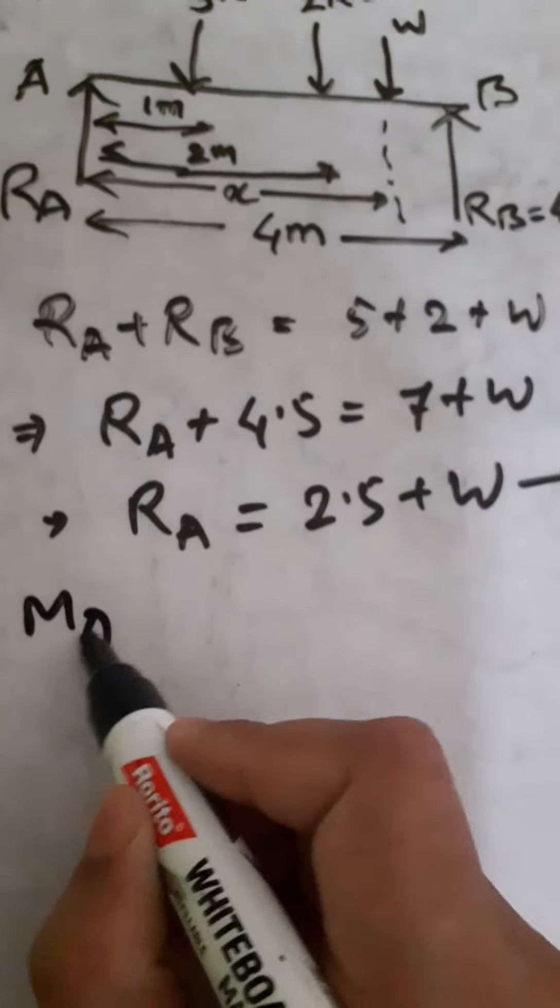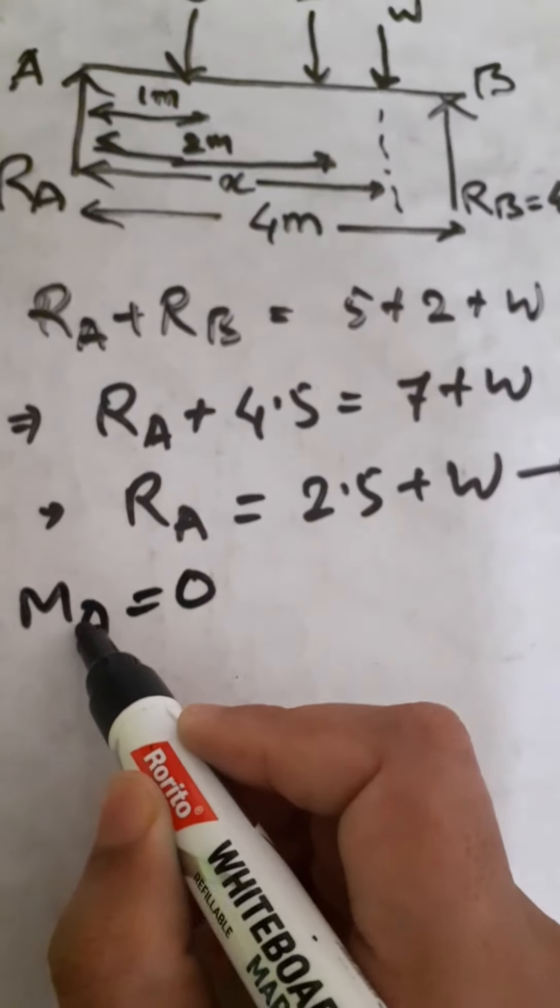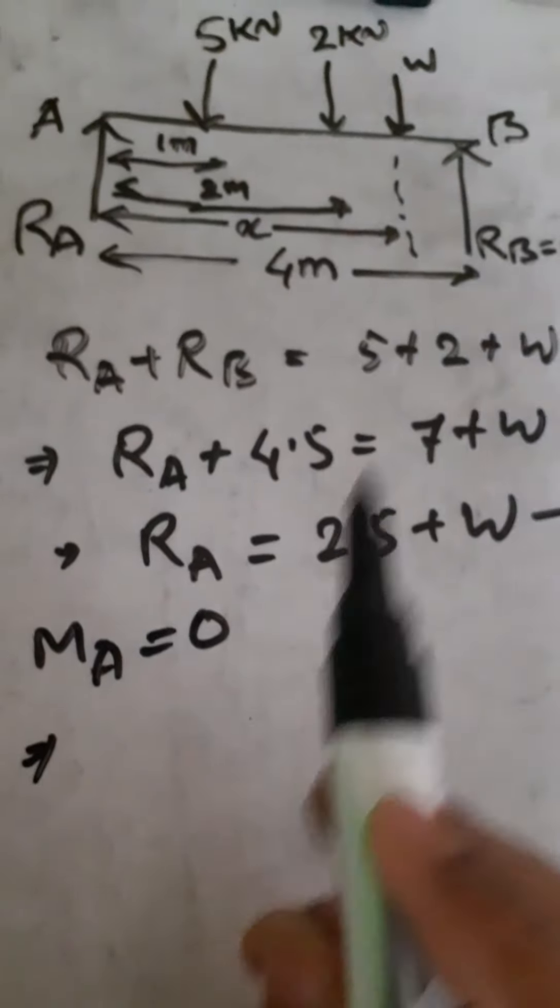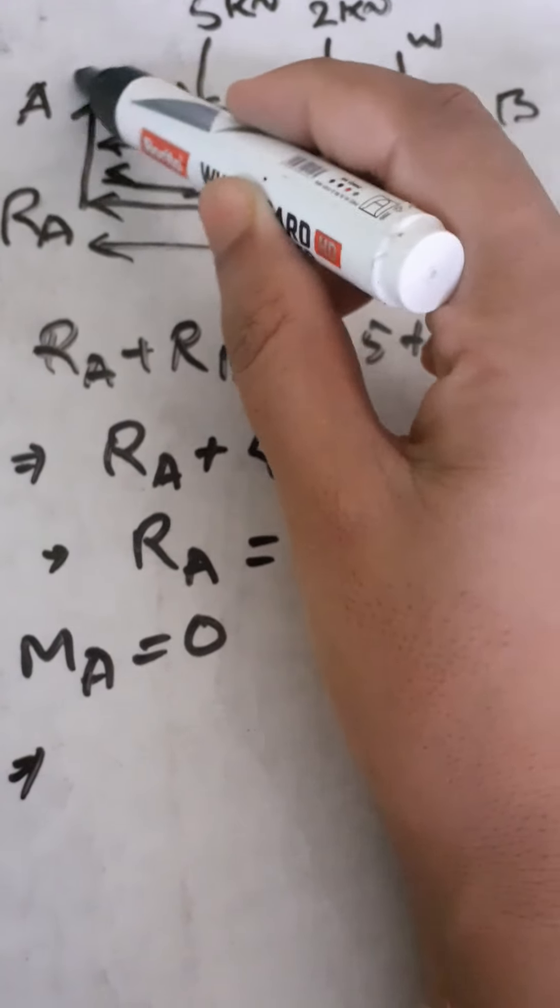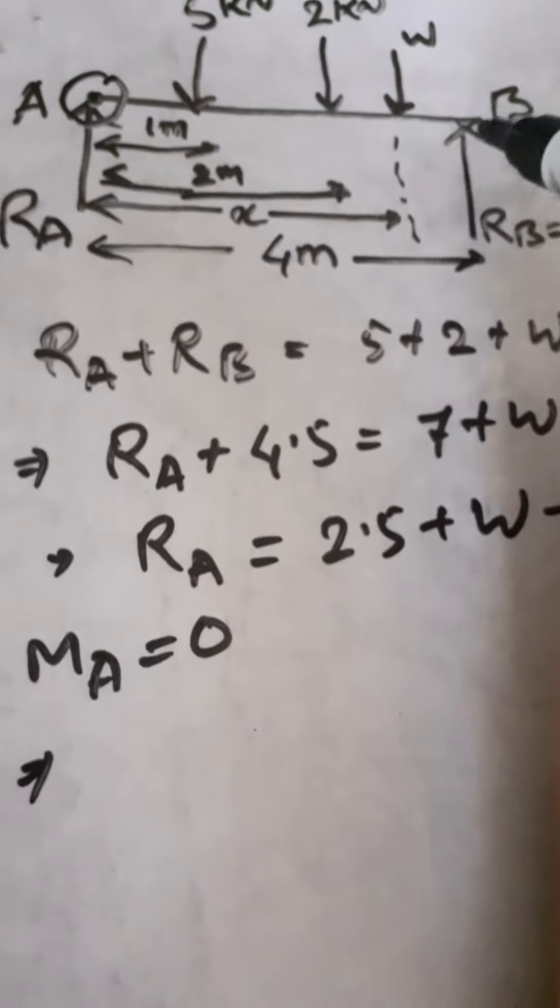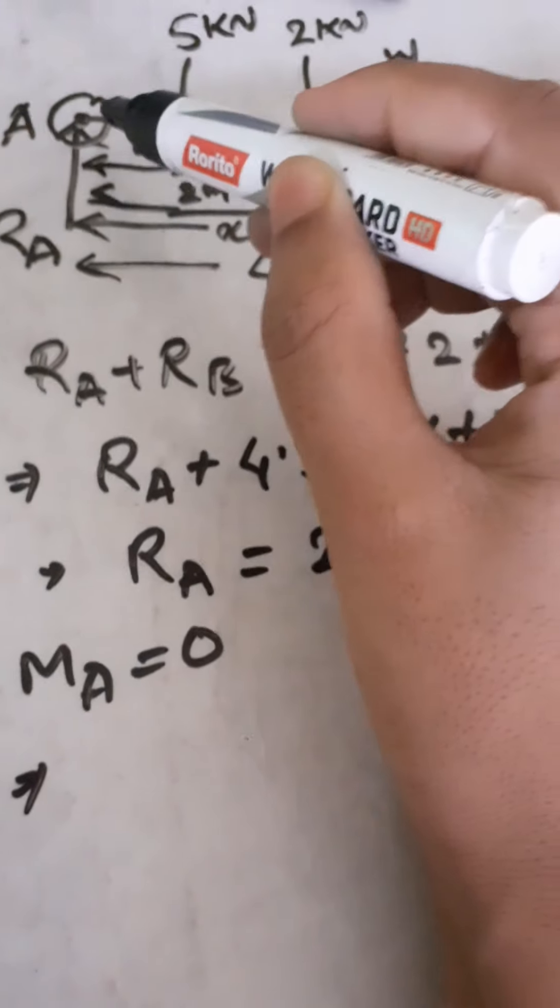About point A we consider equilibrium. At point A the moment is zero, so we consider the equilibrium condition.